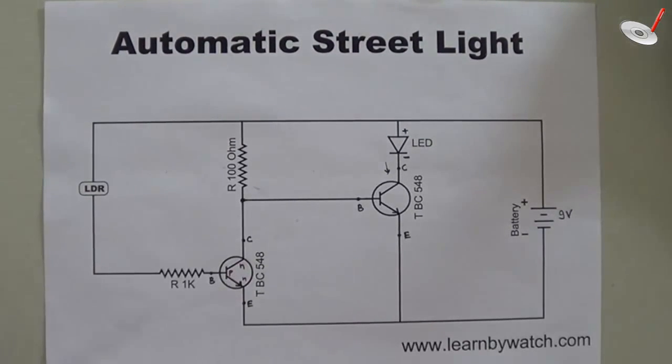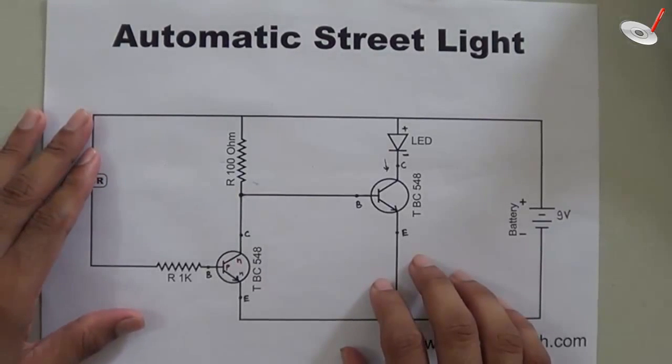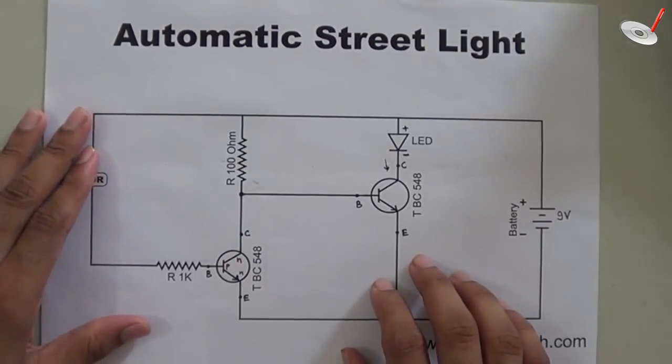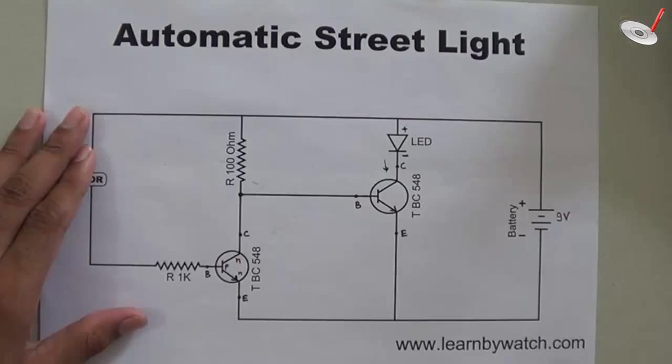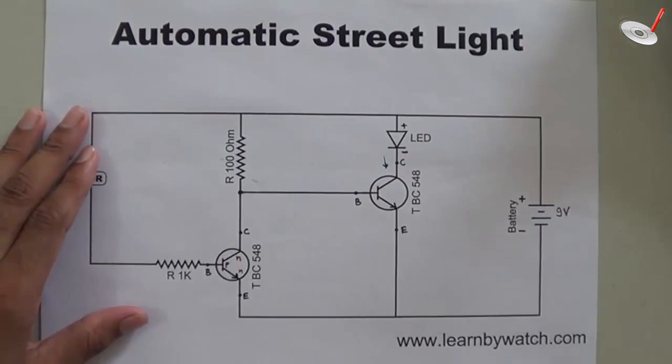I think the working of this circuit is now clear. If you like this explanation of the automatic street light circuit, please share this video with your friends and like it. Thank you.